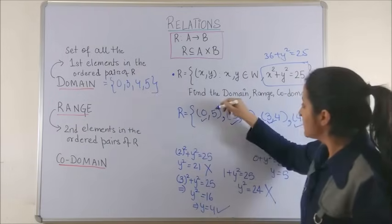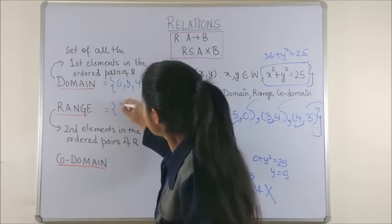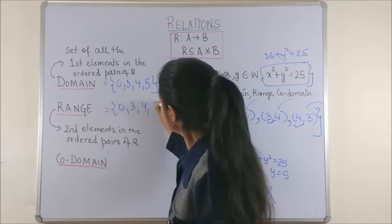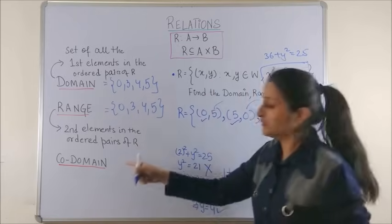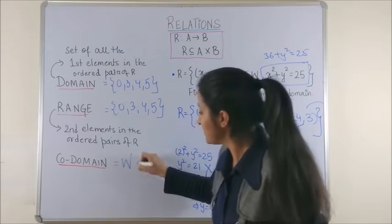Again, the range is 5, 0, 4, 3. So, precisely the same set. And talking of the co-domain, it is always the entire second set, which is whole numbers.